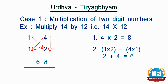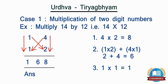Step 3: multiply the first digit of the first number, i.e. 1, and first digit of the second number, i.e. 1, vertically — 1 × 1 which becomes 1. It gives the leftmost part of the answer. So the answer becomes 1, 6, 8.